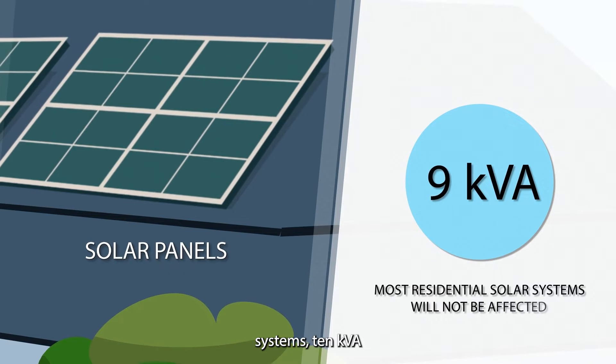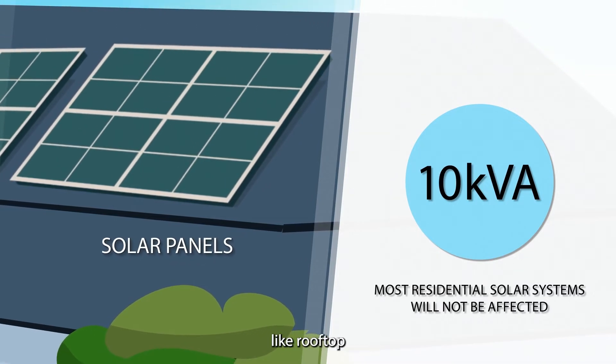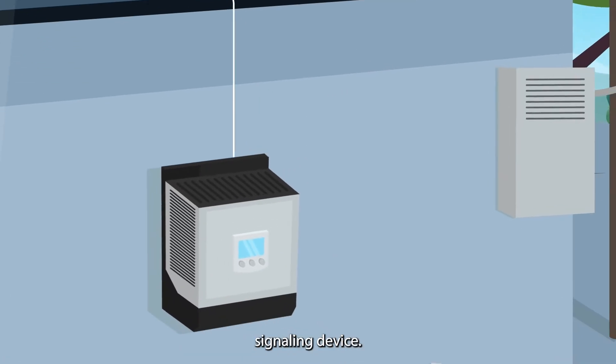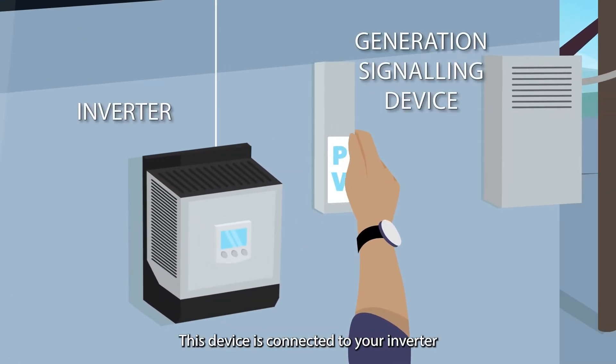To support the continued uptake of renewables, new inverter systems, 10kVA and above for generation systems like rooftop solar and battery, need to be fitted with a generation signalling device. This device is connected to your inverter at the time of system installation.